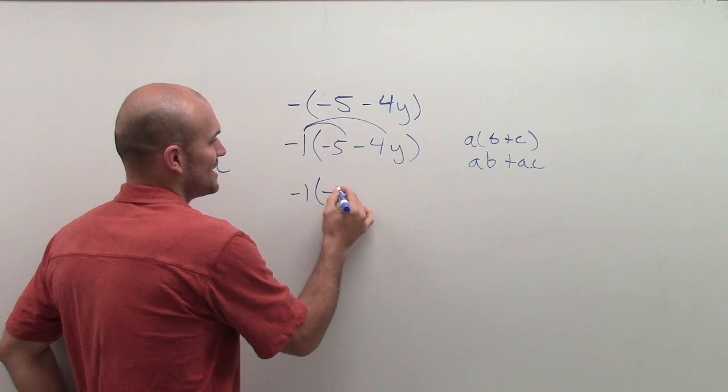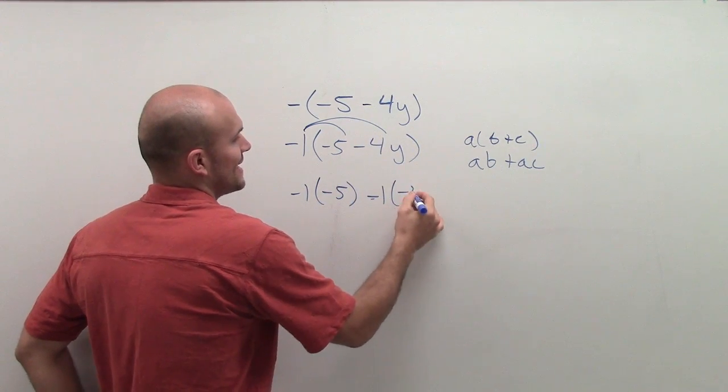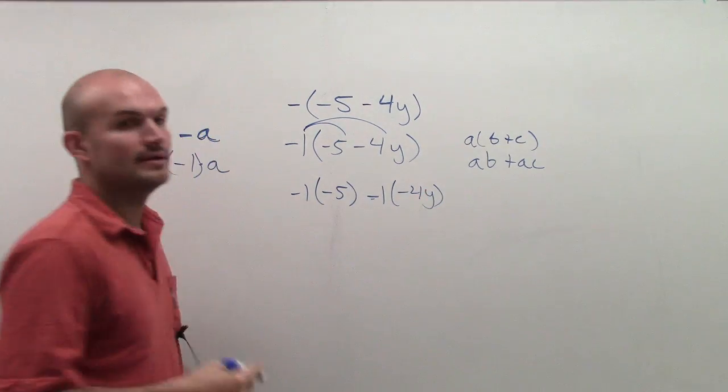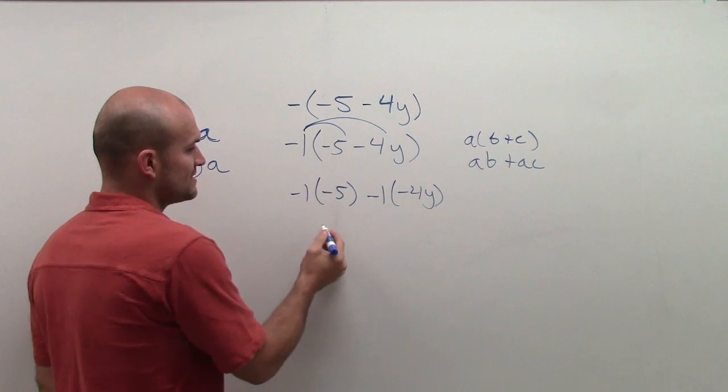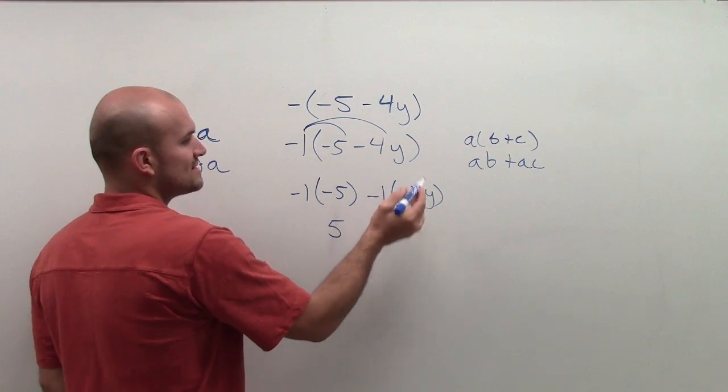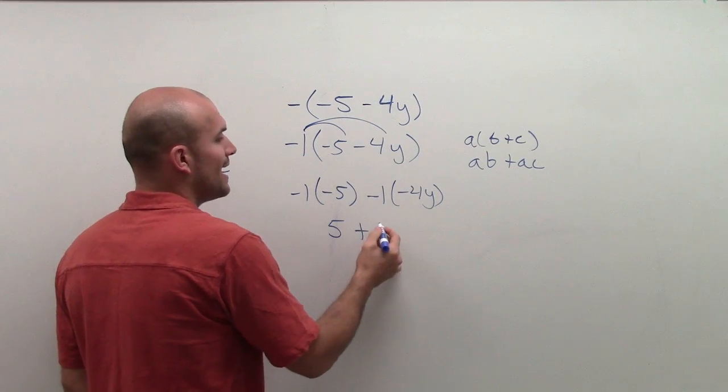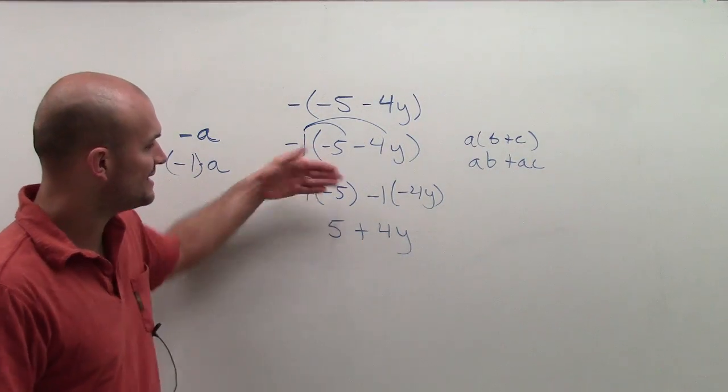I have negative 1 times negative 5, and then minus 1 times a negative 4y. Now, by simplifying this, I have negative 1 times a negative is going to give me a positive 5. And then negative 1 times negative 4y is going to give me a positive 4y. And therefore, you can see this work.